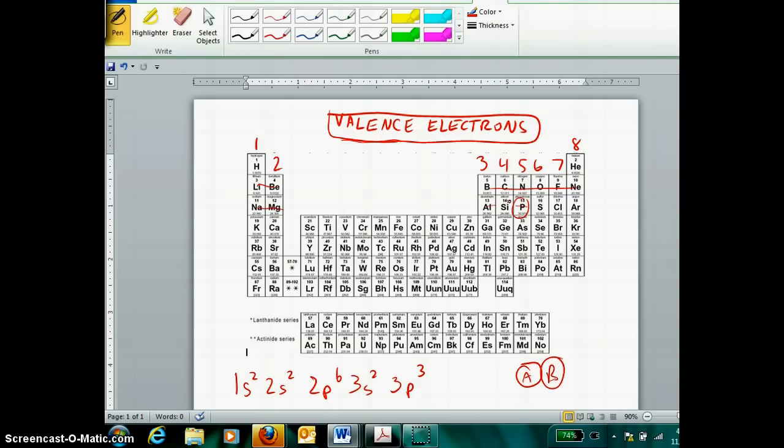However, if we want to talk about the valence configuration of phosphorus, the electrons that are in the outermost or highest principal energy level are these electrons here and here, those with a principal quantum number three. So actually, the valence configuration of phosphorus is simply 3s2 3p3.